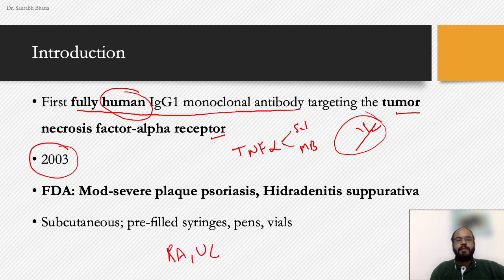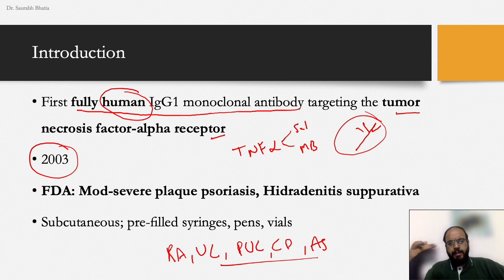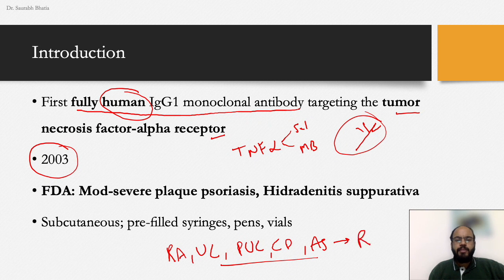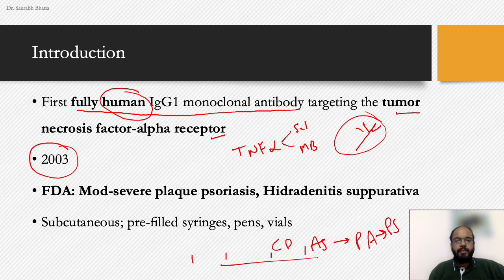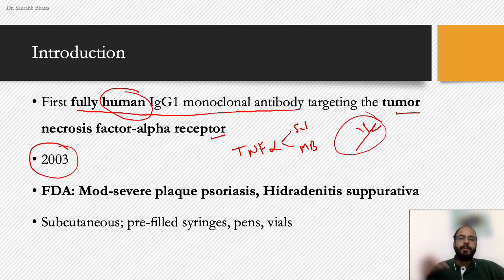Adalimumab was introduced for use in 2003. Its first indication was rheumatoid arthritis, followed by ulcerative colitis, pediatric ulcerative colitis, Crohn's disease, and ankylosing spondylitis. Like many drugs, it gradually made its way to psoriatic arthritis and then to psoriasis. In dermatology, it received FDA approval for moderate-to-severe plaque psoriasis and subsequently for hidradenitis suppurativa.